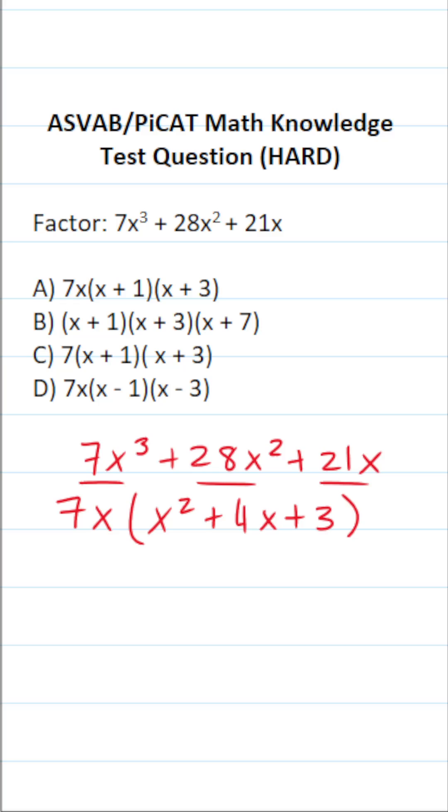Now, in this case, we're not done because we can actually factor x² + 4x + 3, so this becomes 7x, and if we can factor x² + 4x + 3, it's going to look like this, x times x.